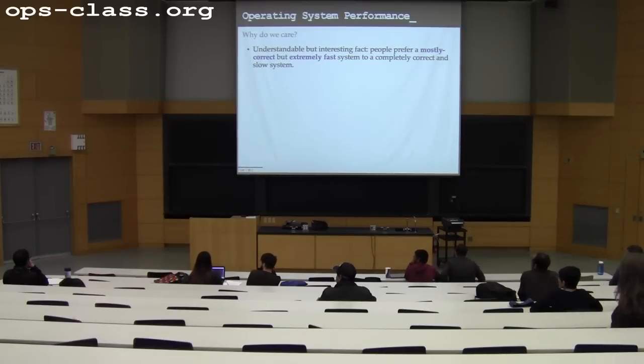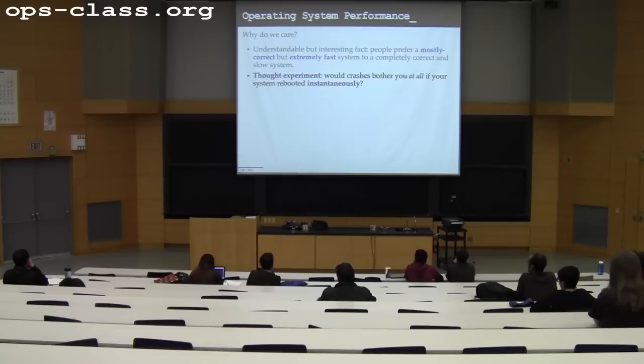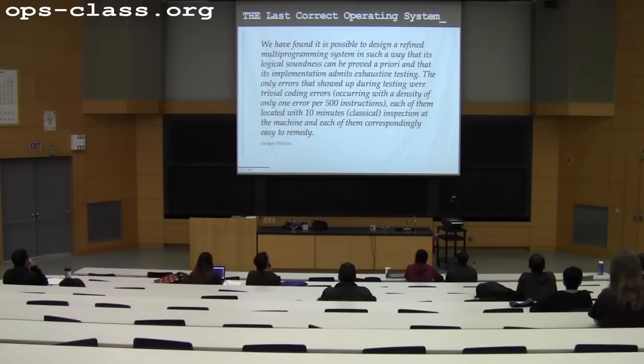And people also prefer, I would argue, people prefer a fast and mostly correct operating system to a slow but broken operating system. Now the assignment three auto grader requires that your operating system both be reasonably not slow and correct. But most people would prefer this. So one of the things I ask people to think about is if your computer rebooted instantly and not just rebooted, it somehow restarted and recovered all of the state for the programs that you were using, would you care if something had gone wrong? You might not even notice.